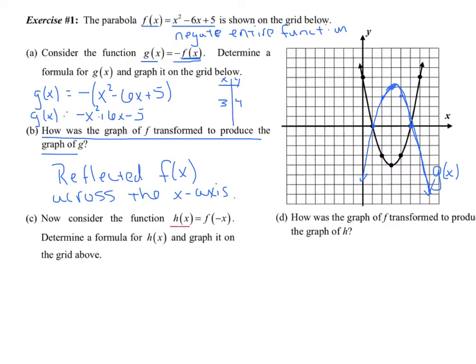Now they want you to consider h of x, which is f of negative x. So in this particular one, I want you to think substitute. We're going to substitute a negative x into each term. So if h of x is equal to f of negative x, what I'm going to do is every time I see an x, I'm going to substitute a negative x into his place. And that last term is strictly a plus 5. It doesn't have an x in it.